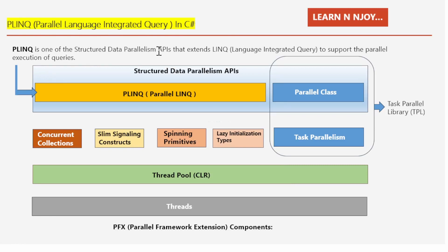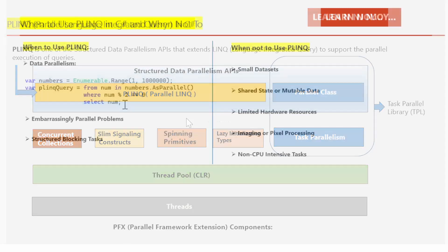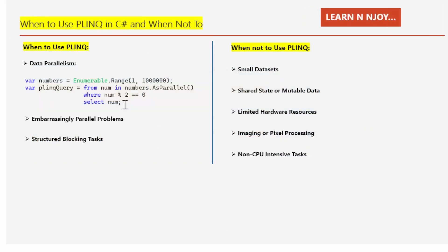PLINQ — Parallel Language Integrated Query in C# — is one of the structured data parallelism APIs that extends LINQ to support parallel execution of queries. If you watched my previous videos, you might recall the diagram we covered. Today we'll go one step further, talking about when you should use PLINQ and when it might not be the best choice.